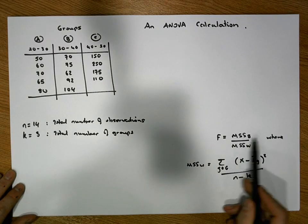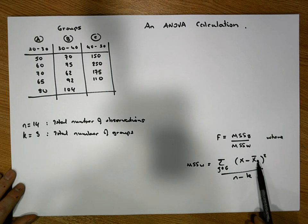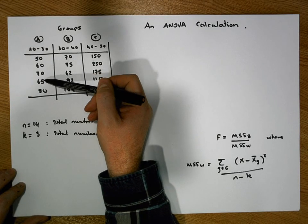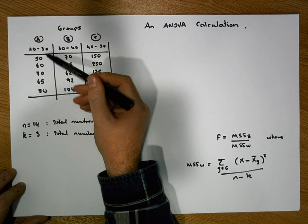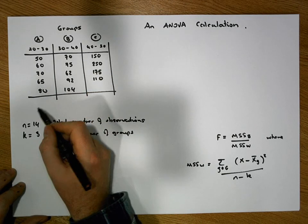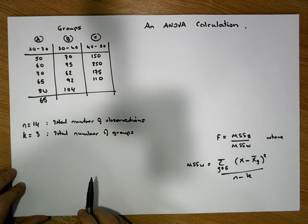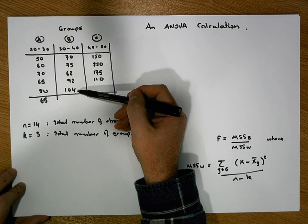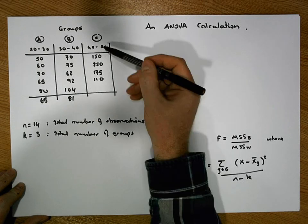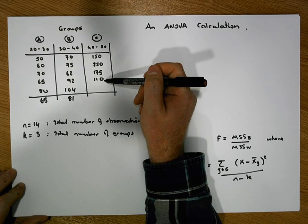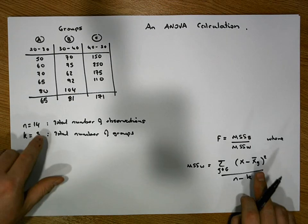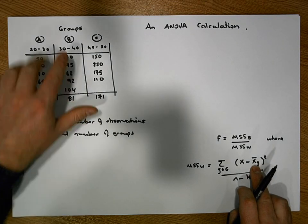To calculate the within measure, we first need to calculate the group average, x-bar subscript g, for each group. We add up all the observations in each group and divide by how many observations there are. For group A, dividing by 5 gives a group average of 65. For group B, dividing by 5 gives an average of 80.6, which we round to 81. For group C, dividing by 4 gives an average of 171.25, which we round to 171.